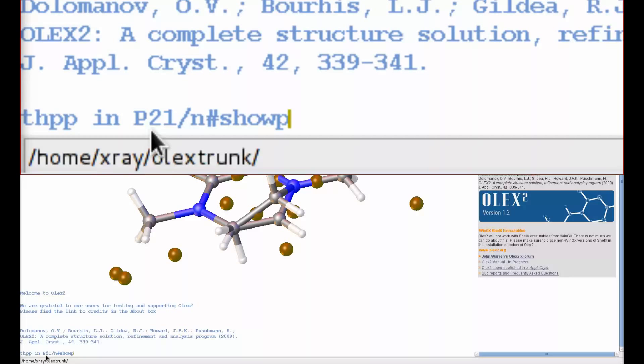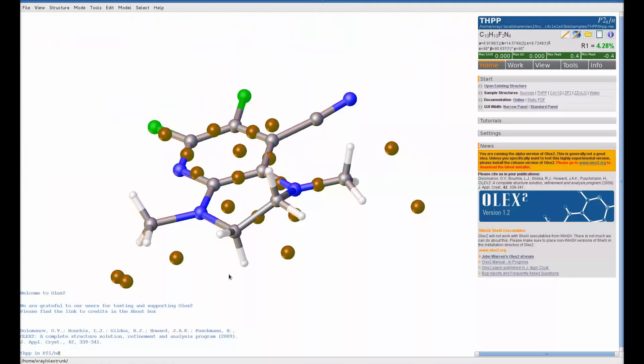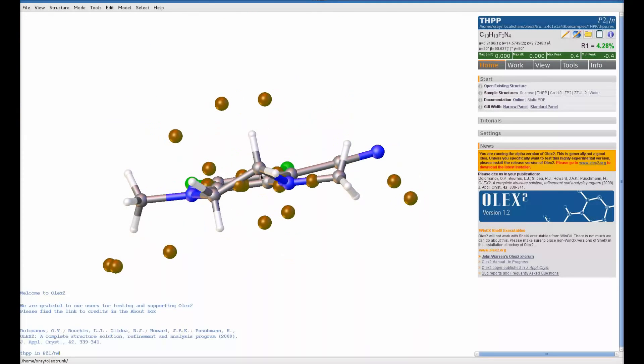SHOWP 0 and 1 will show all of the part that belongs to part 0, which is the default structure, and the disordered components in part 1. As you can see, our model now only has one disordered component.